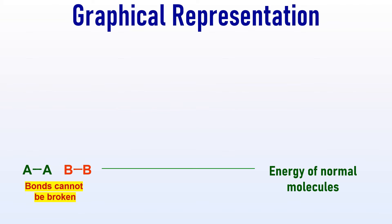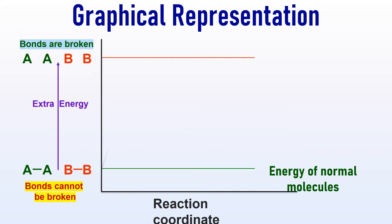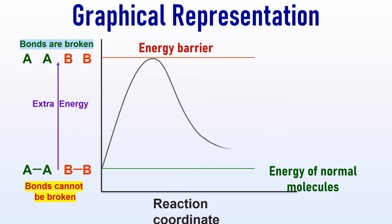Under normal conditions, the reactant molecules lack sufficient energy to break the existing bonds. They must acquire an additional amount of energy to accomplish this. As depicted on the screen, the reactant molecules must overcome an energy barrier in order to undergo a chemical reaction.